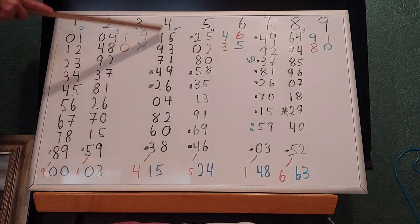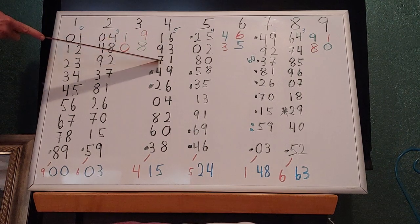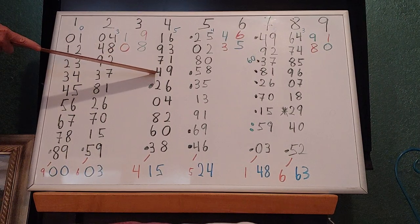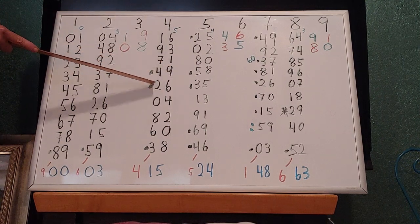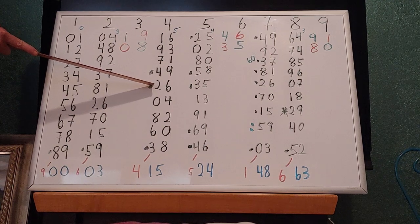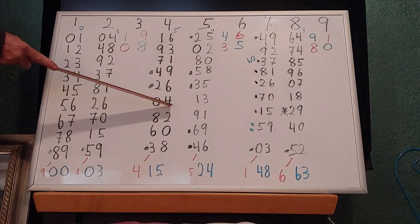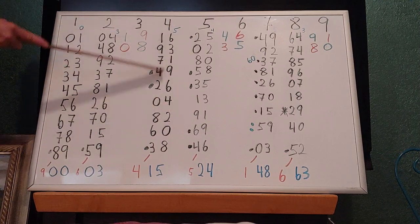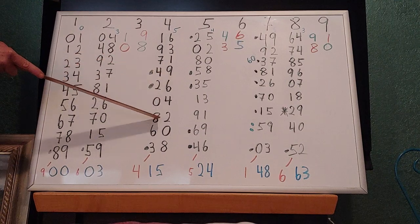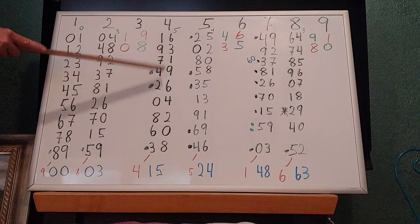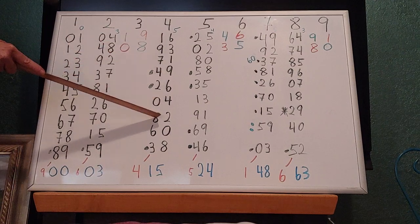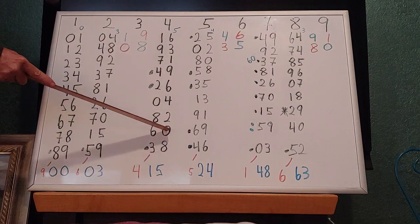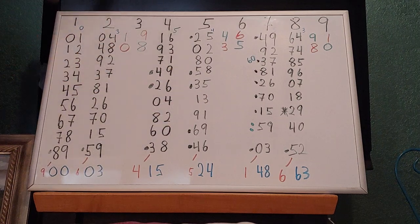We will do 4. 4 squared is 16, 44 squared is 1936. 444 squared is 197136. Then it goes 197530 8246 9136. Then 197530 860 2469136. And continuing: 19753086 38024 6913 6. That's how we do 4.